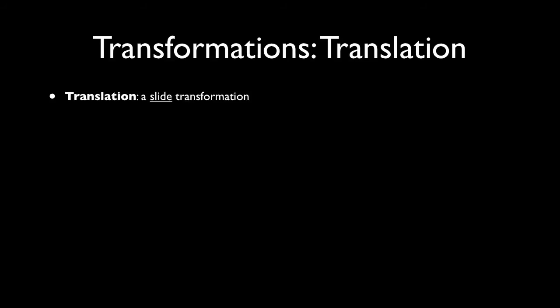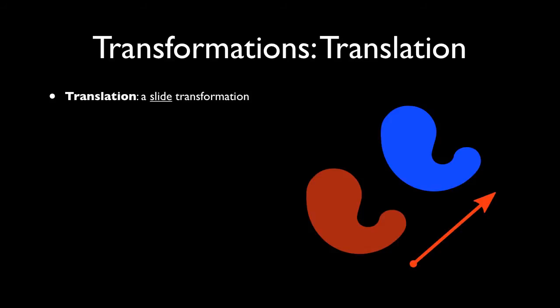A translation is also called a slide transformation. You're probably familiar with this one. The red object is the preimage. The blue is the image.